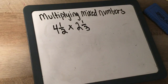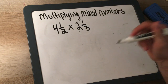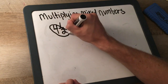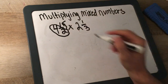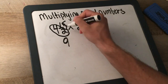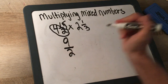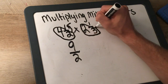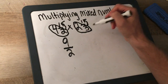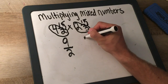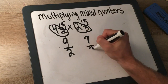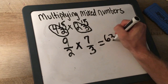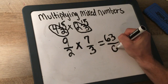Alright, let's try another example: 4 and 1/2 times 2 and 1/3. We're going to do the exact same thing. We multiply the whole number by the denominator. We get 8 added to the top, so we get 9 over 2. Then 2 and 1/3: 2 times 3, whole number times the denominator, added to the top. 2 times 3 is 6, add to the top is 7, keep the same denominator 3. Then 9 times 7 equals 63, and 2 times 3 equals 6.